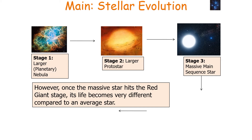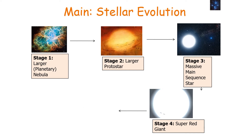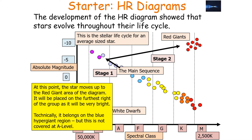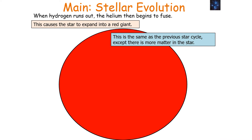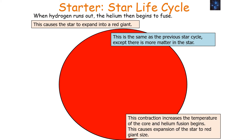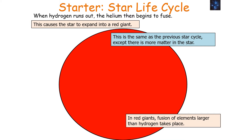Once the massive star hits the red giant stage, its life becomes very different compared to an average star. When it hits the super red giant stage, the star moves up to the red giant area of the diagram, placed furthest right as it will be very bright. When the hydrogen runs out, helium begins to fuse, causing the star to expand to a red giant. The main sequence star contracts as hydrogen fusion ceases, gravitational attraction pushes the star in, the core temperature increases, and helium fusion begins, causing expansion to red giant size.